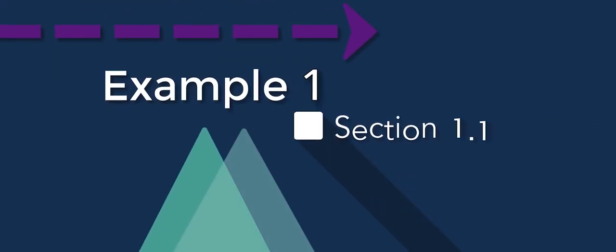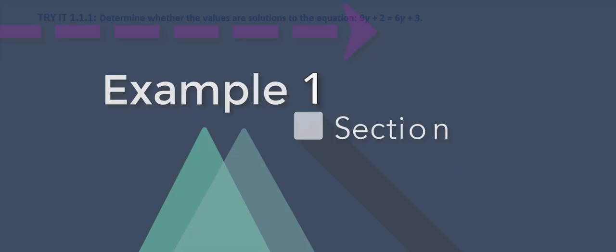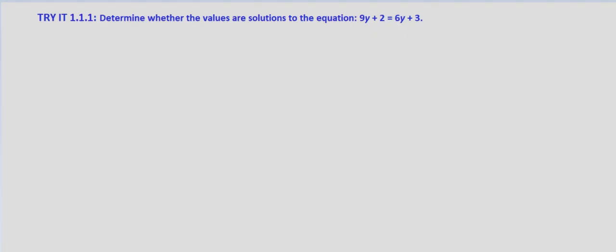With this first try-it exercise, we're asked to do the same thing that was shown in the first example. We're given an equation and we're asked to determine if certain values are solutions to the equation. So we're given 9y plus 2 equals 6y plus 3, and we are asked if a) y equals 4 thirds is a solution and b) if y equals one third.